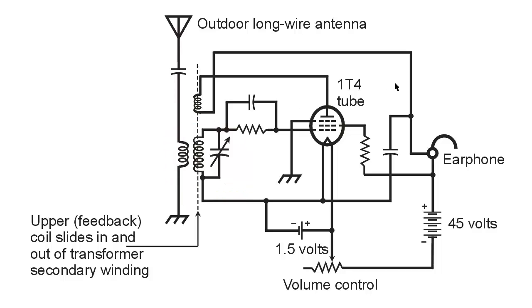Anyway, this regeneration, regenerative, comes from the fact that it would cause positive feedback, and you would insert this coil into the larger coil until you got just enough feedback so that the thing would start to oscillate. It would oscillate at a frequency pretty much determined by what you were tuned to. So it produced, in effect, kind of a direct conversion receiver.